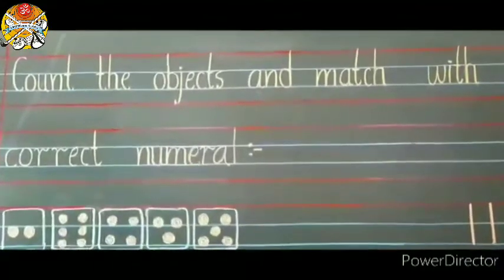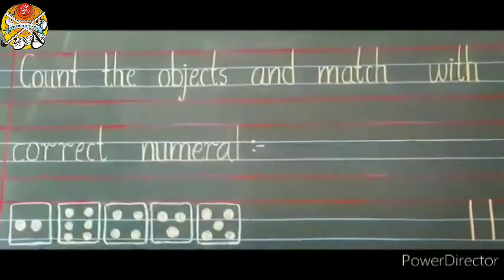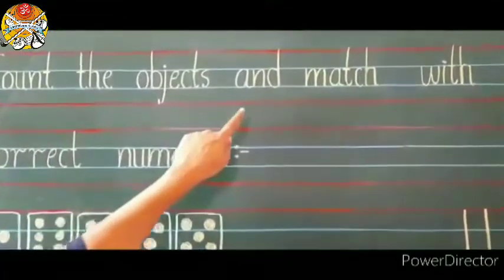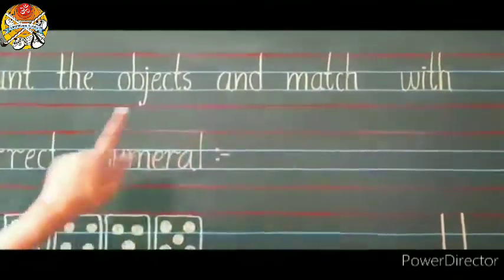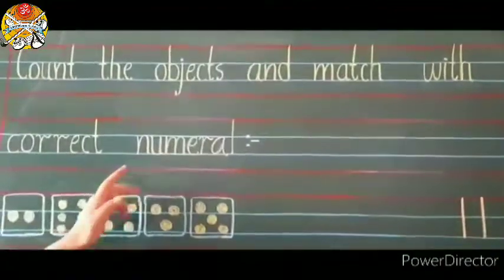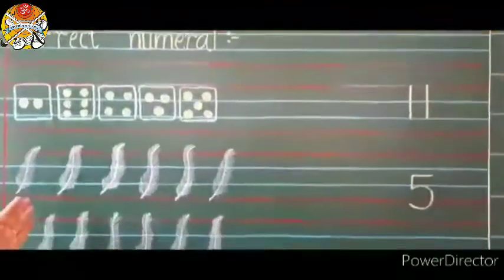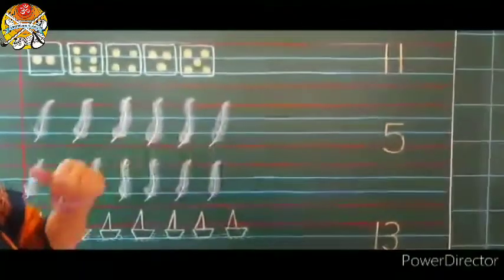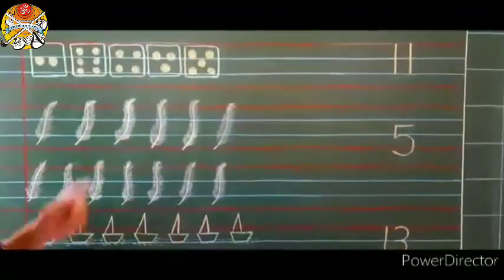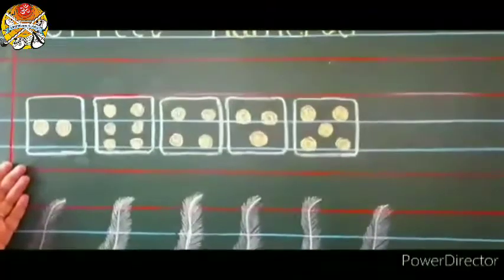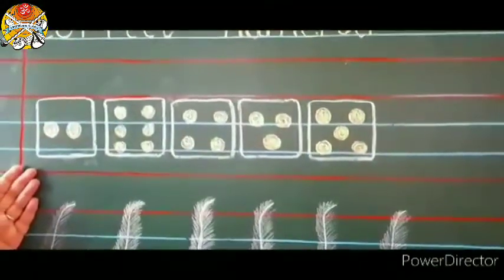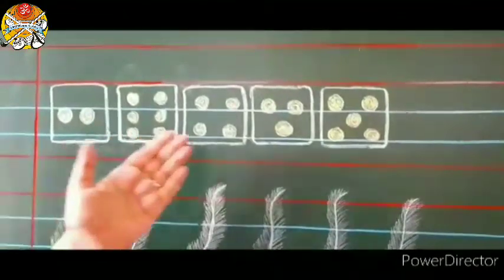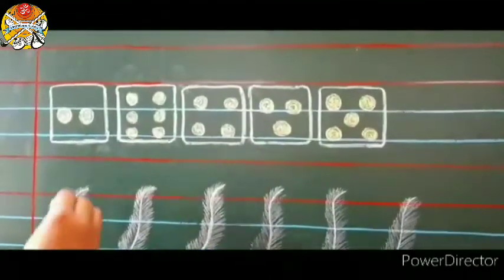Now children, let's do an activity. Come on, read along. Now, count the objects and match with correct numeral. We have to count these objects and on the other side, numerals are given. So we have to count and match. Let's count. What are these? You all play Ludo and Snakes and Ladder. So what do we use? It's dice. So these are dices. Let's count them.